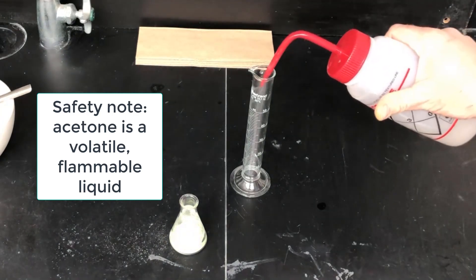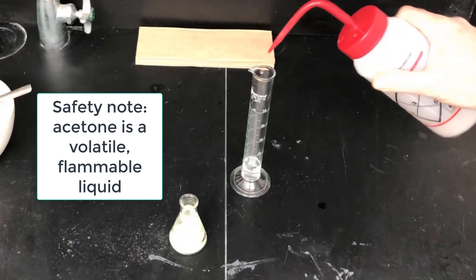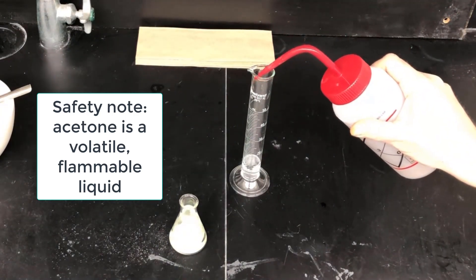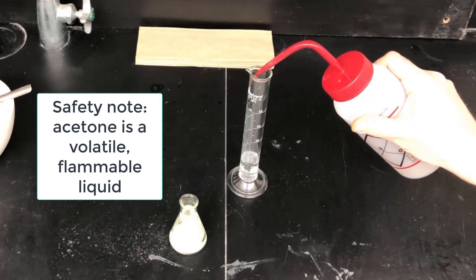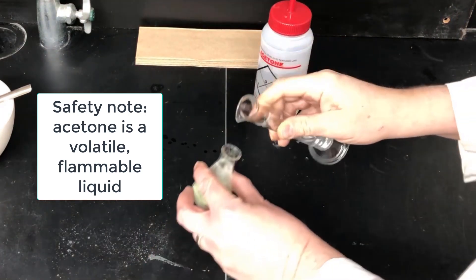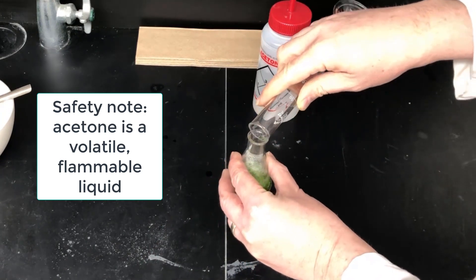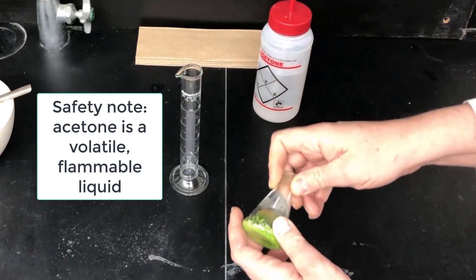So now I'm going to put some acetone in there, 15 milliliters of acetone. Now you should just be aware, acetone is a volatile flammable liquid, so you're going to want to be careful with it and avoid open flame. Take that liquid, put it in there, swirl it around.